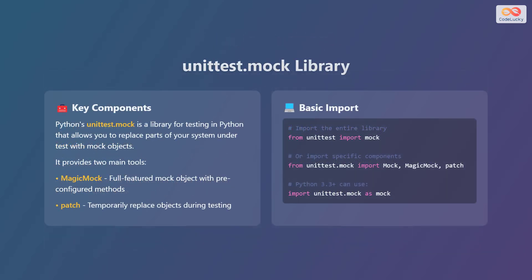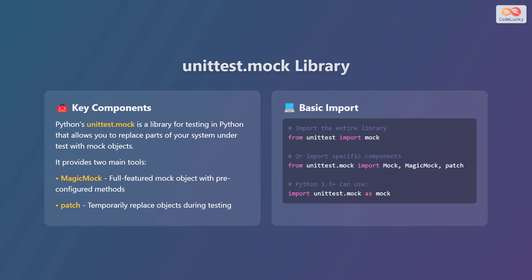Let's explore the unittest.mock library in Python. Python's unittest.mock is a library for testing in Python that allows you to replace parts of your system under test with mock objects. It provides two main tools: MagicMock, a full-featured mock object with pre-configured methods, and patch, which is used to temporarily replace objects during testing. In Python 3.3 and above, you can also use import unittest.mock as mock.